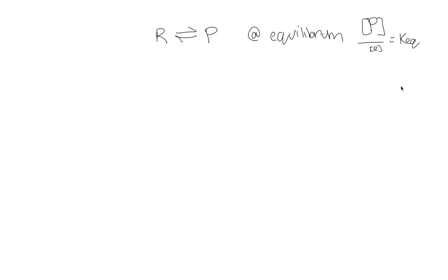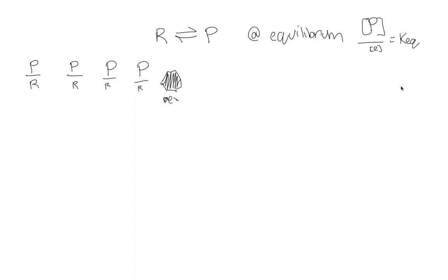If we start with equal amounts — which is akin to what we think about under standard conditions, where we have equal amounts of products to reactants — in this case, we're going to have less products than we would find at equilibrium. So in order to get to equilibrium, we're going to have to make more products. Over time, we're going to make more products, taking away some reactants, make more products, take away more reactants, until we reach equilibrium.